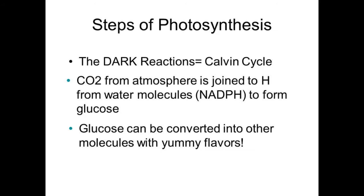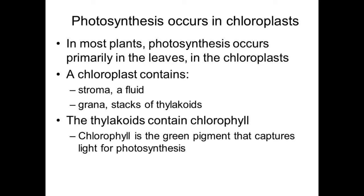Step two is the dark reaction, also called the Calvin cycle, where CO2 from the atmosphere is joined to hydrogen from water molecules to form glucose. This glucose can be converted into other molecules. There are many types of carbohydrates: monosaccharides, disaccharides, trisaccharides, and polysaccharides. This phenomenon occurs in the plant, primarily in the leaves, specifically in the chloroplast.